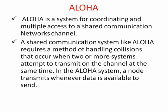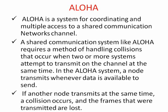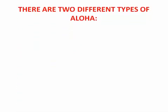A shared communication system like ALOHA requires a method of handling collisions that occur when two or more systems attempt to transmit on the channel at the same time. In the ALOHA system, a node transmits whenever data is available to send. When systems transmit simultaneously, the data collides and gets corrupted. If another node transmits at the same time, a collision occurs and the frames that were transmitted are lost.